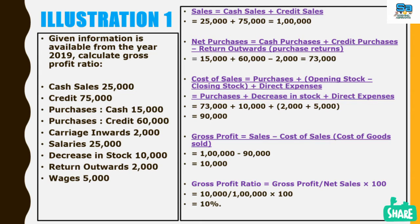Opening stock plus purchases minus closing stock. Since the information given here requires us to modify the formula, we use: purchases plus opening stock minus closing stock, plus direct expenses.